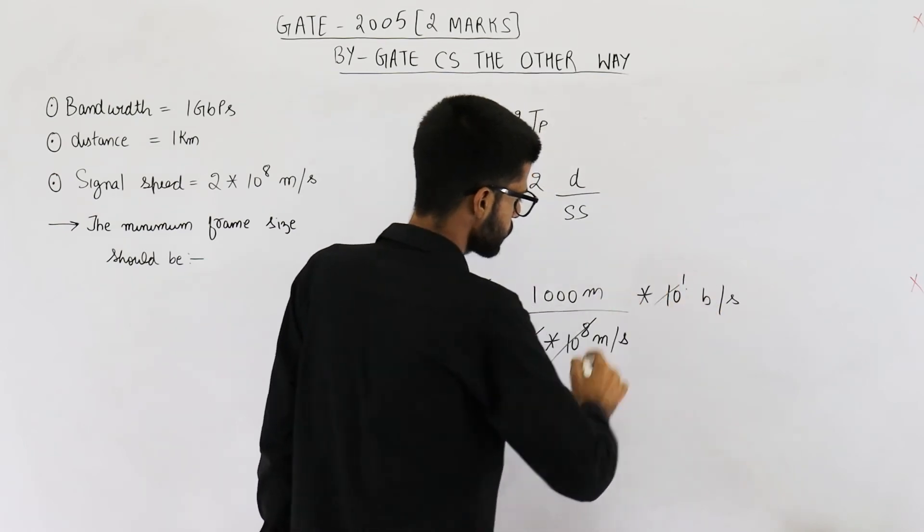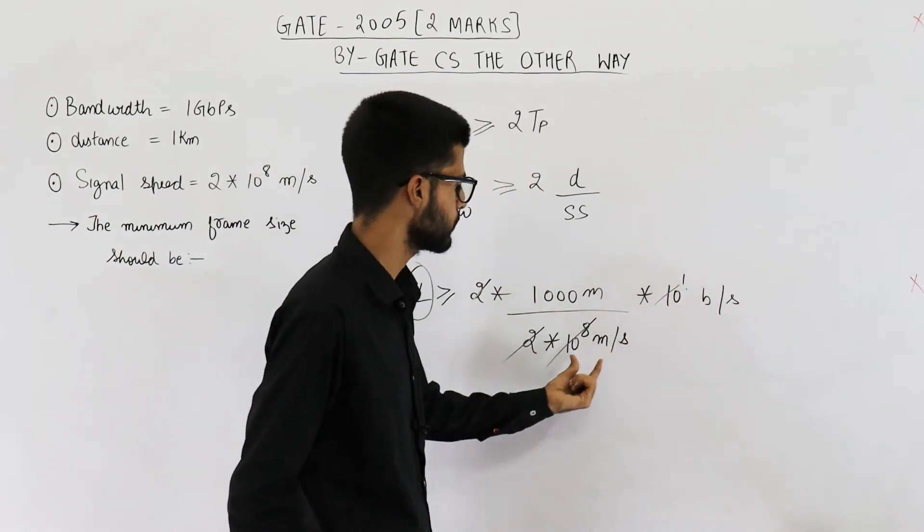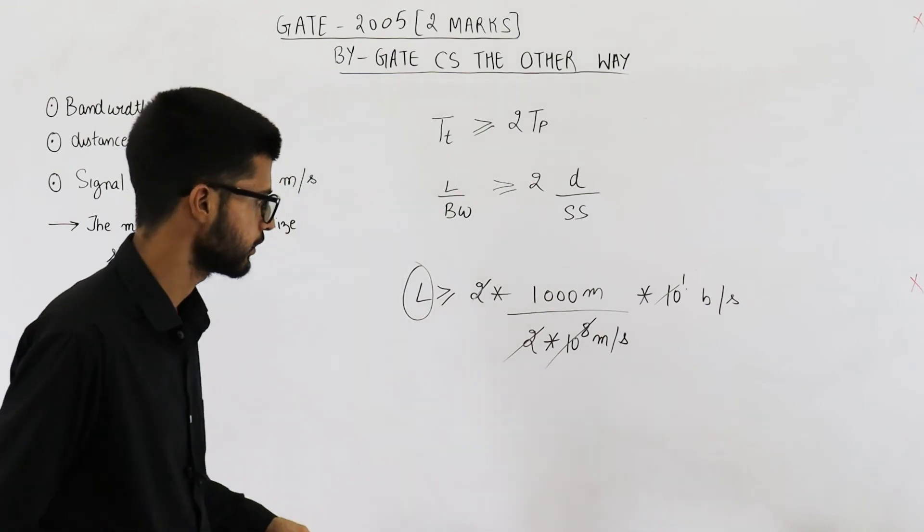This will be 10 raised to the power 1 because 10 raised to the power 8 will be canceled with 10 raised to the power 8.